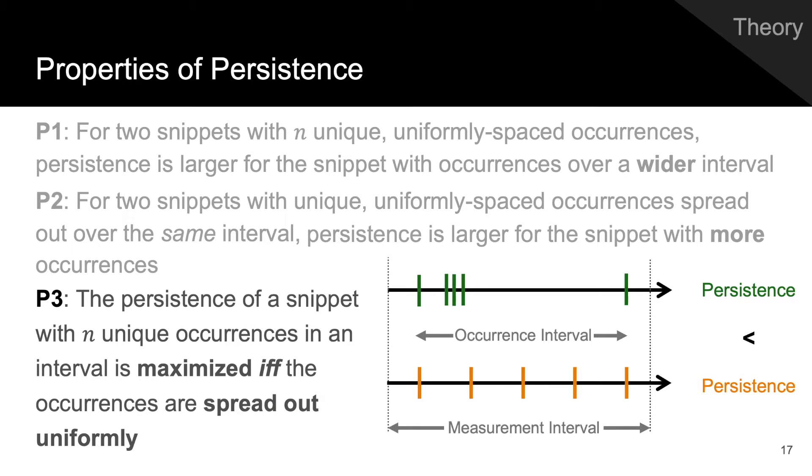The maximum persistence of any snippet with n unique occurrences in a fixed interval ought to be achieved when those occurrences are uniformly spaced out over the interval.